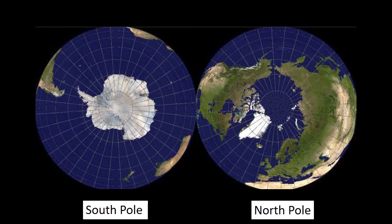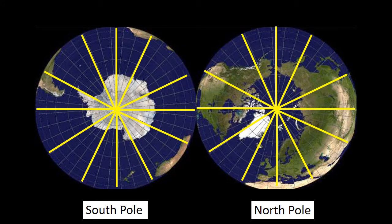Since all the lines of longitude meet at the poles, it means at the North Pole and the South Pole, all 24 time zones hit at a single point. It is not possible to follow all the time zones, and just because of the location of the North Pole and the South Pole, there are no specific time zones observed.